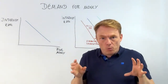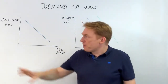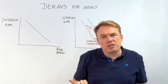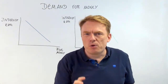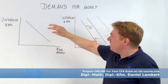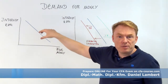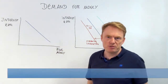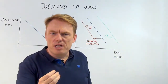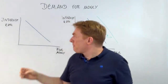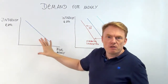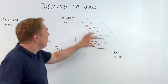We call this opportunity cost. The interest rate is the opportunity cost of having currency with you. Because of this, there is a negative correlation between the interest rate and the demand for money. That's very important to understand, and it gives us the demand curve for real money.